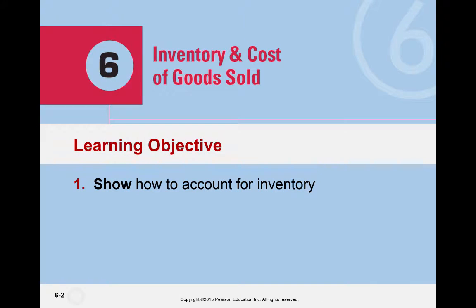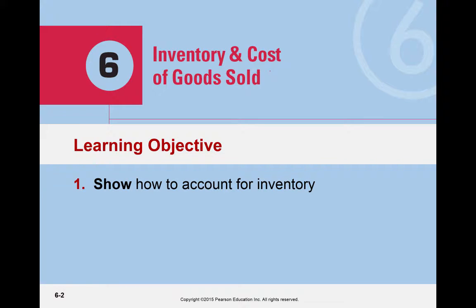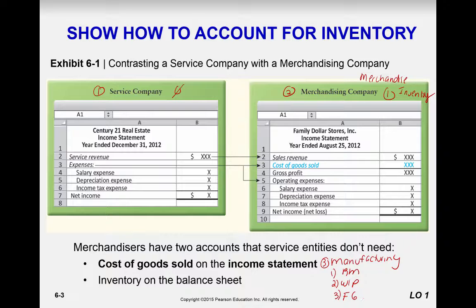Hello and welcome back to our video lecture. Today we're covering Chapter 6: Inventory and Cost of Goods Sold (COGS). First, we'll learn how to account for inventory. There are three types of companies: service companies, which have zero inventory accounts; merchandising companies, which have one inventory account called merchandise inventory; and manufacturing entities, which have three inventory accounts — raw materials, work in process (WIP), and finished goods.